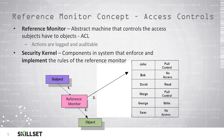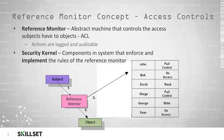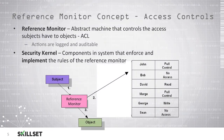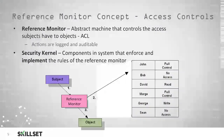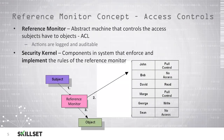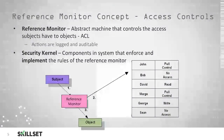When a subject attempts to access an object, they first must connect through the reference monitor, and the reference monitor has an access control list used to determine what privileges the user has to access that object, if any. For example, John has full control, Bob has no access to the object whatsoever, and David can access the object but is only permitted to read it — he is not permitted to make any changes.